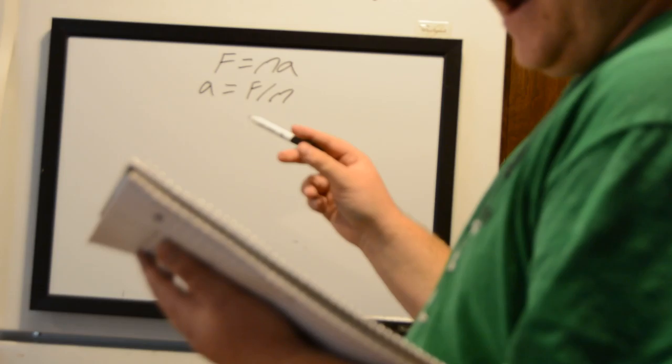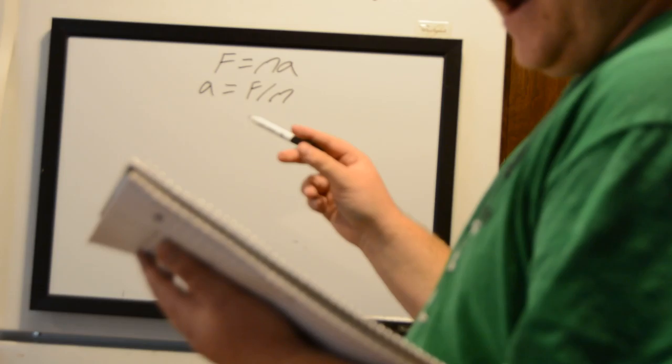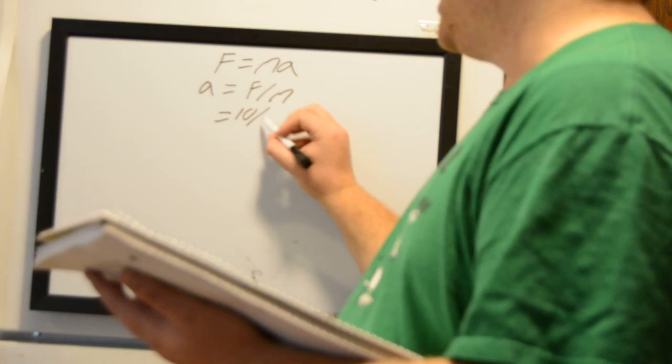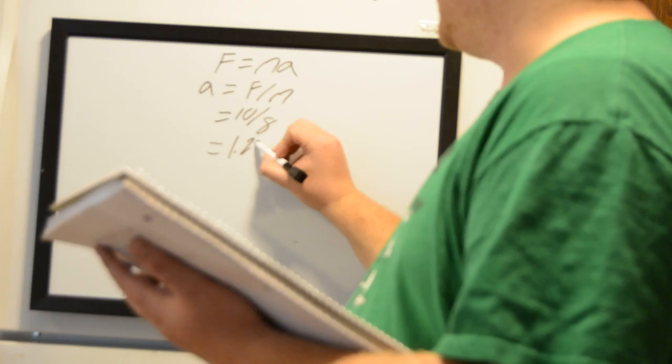And we know what our force is. We know what both of these are, actually. In this case, we have a force of 10 newtons divided by 8 kilograms is equal to 1.25 meters per second squared.